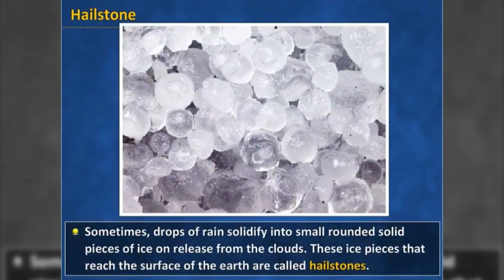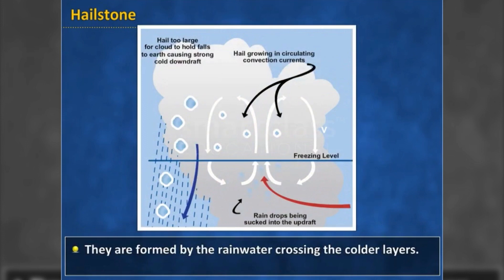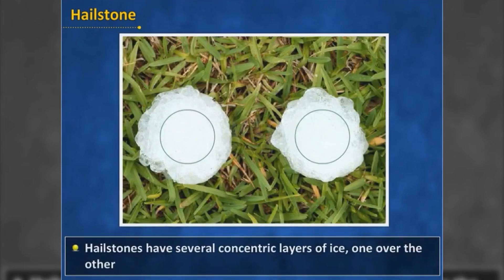Hailstones: sometimes drops of rain solidify into small rounded solid pieces of ice on release from the clouds. These ice pieces that reach the surface of the earth are called hailstones. They are formed by the rainwater crossing the colder layers. Hailstones have several concentric layers of ice, one over the other.